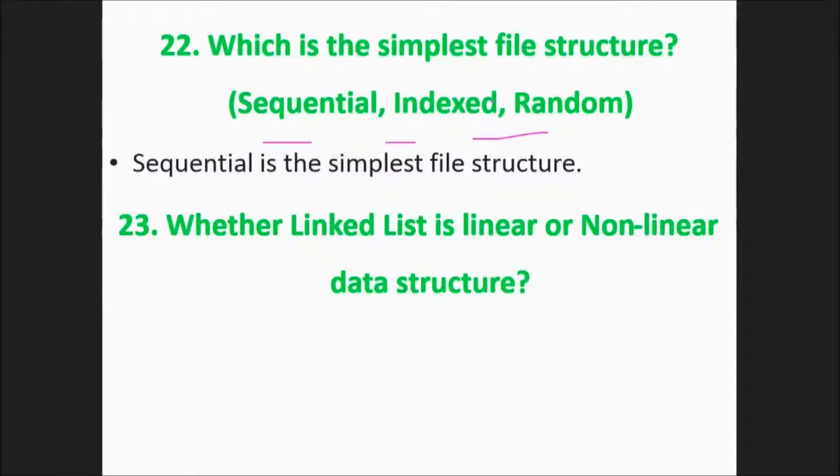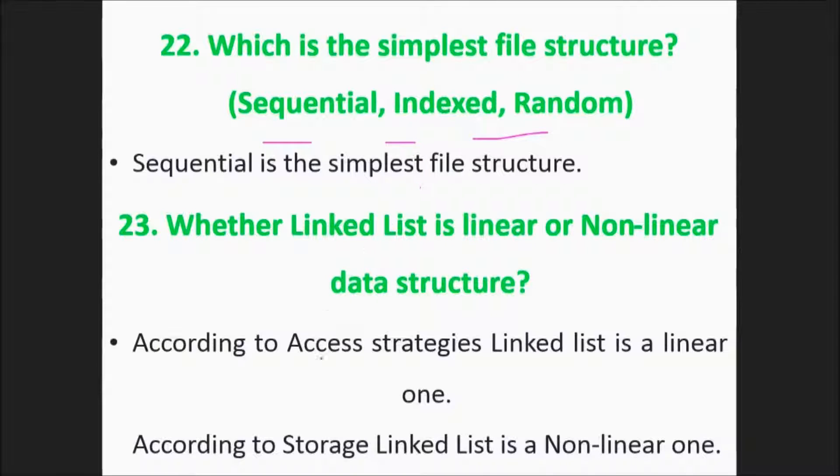Whether linked list is linear or non-linear data structure according to the access strategies? Linked list is linear because it is like a train coupled together, sequential. According to storage and according to accessing it is a linear one. This was a few questions on data structure. Hope you got the idea. Thank you so much.